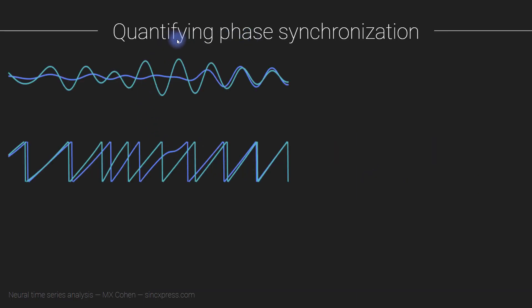Let's get back to quantifying phase synchronization. Imagine these are the narrowband filter time series from two electrodes, and these are the phase angle time series from these two electrodes. You can already see that there are periods, time windows, where there is strong synchronization. Like here, there's really strong synchronization. Here, it looks like there's also some pretty strong synchronization. And then, there's this time window here where there isn't much synchronization.